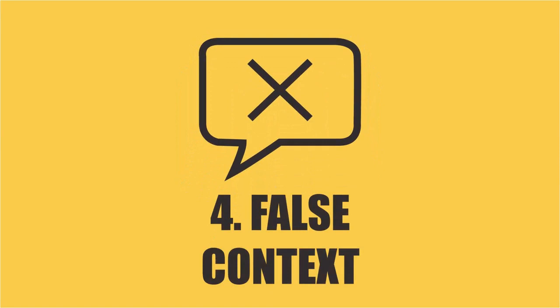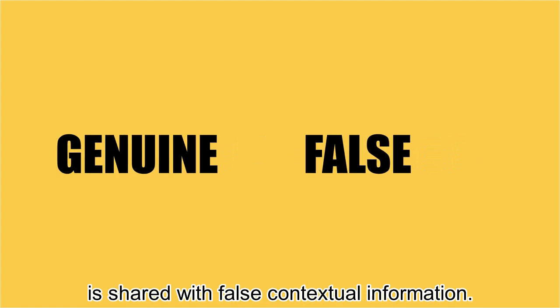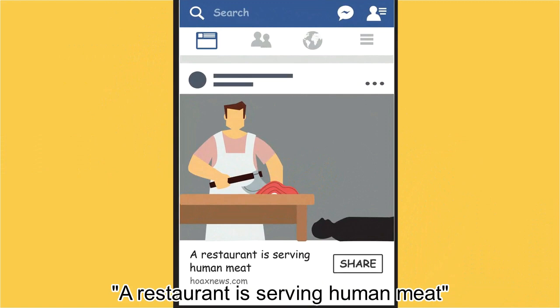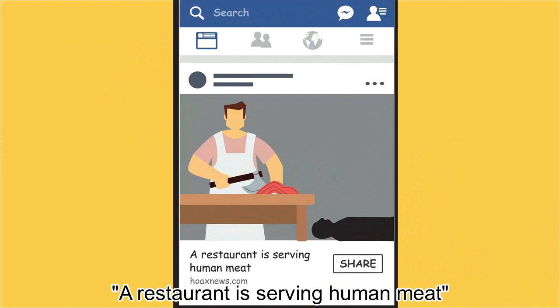Number four: false context. This is when genuine content is shared with false contextual information. For example, an article with a headline 'A restaurant is serving human meat,' accompanied by a picture of a man chopping a human — but in fact, the actual photo was just a screenshot from a movie.